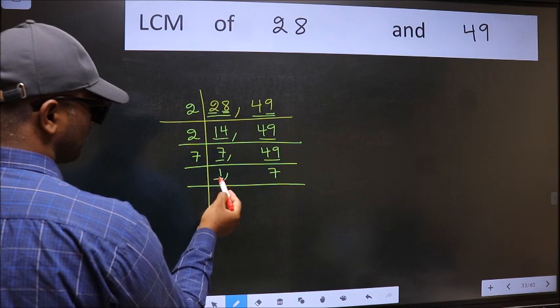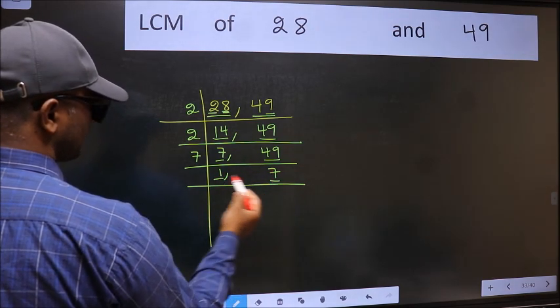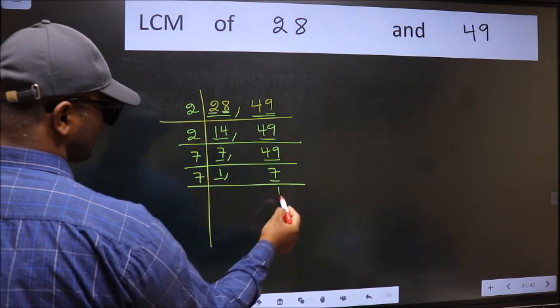Now we got 1 here, so focus on the next number 7. 7 is a prime number, so 7 times 1 is 7.